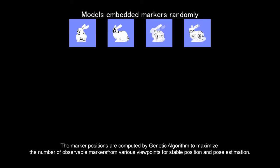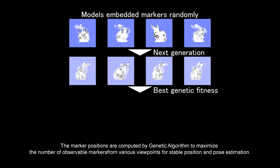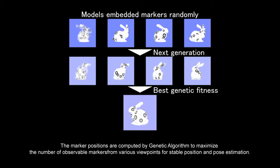The marker positions are computed by genetic algorithm to maximize the number of observable markers from various viewpoints for stable position and pose estimation.